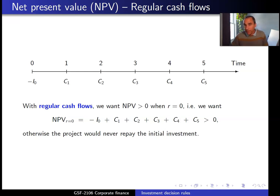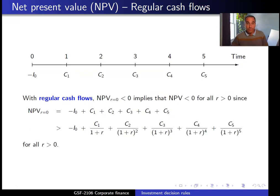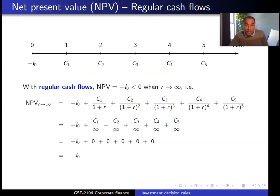If that were not the case with regular cash flows, there would be no point in undertaking the project, because if the sum of the cash flows is negative, the initial investment is never recovered. With regular cash flows, if we have a negative NPV at a discount rate of zero, the project never has a positive NPV for any positive discount rate. When the discount rate goes to infinity, the present value of all future cash flows approaches zero and the NPV equals minus the initial investment.